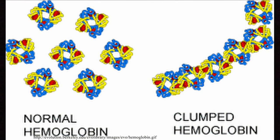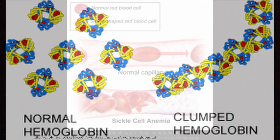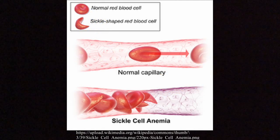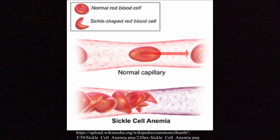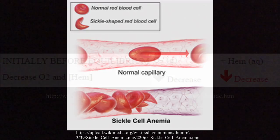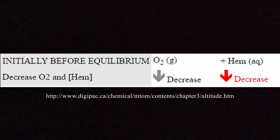Hemoglobin that is made for sickle cell is able to be oxygenated, but it doesn't make the same sort of properly oxygenated hemoglobin that the body is looking for, and this type of cell is unable to properly oxygenate the tissues of the body. Yet again, Le Chatelier's principle comes into play.